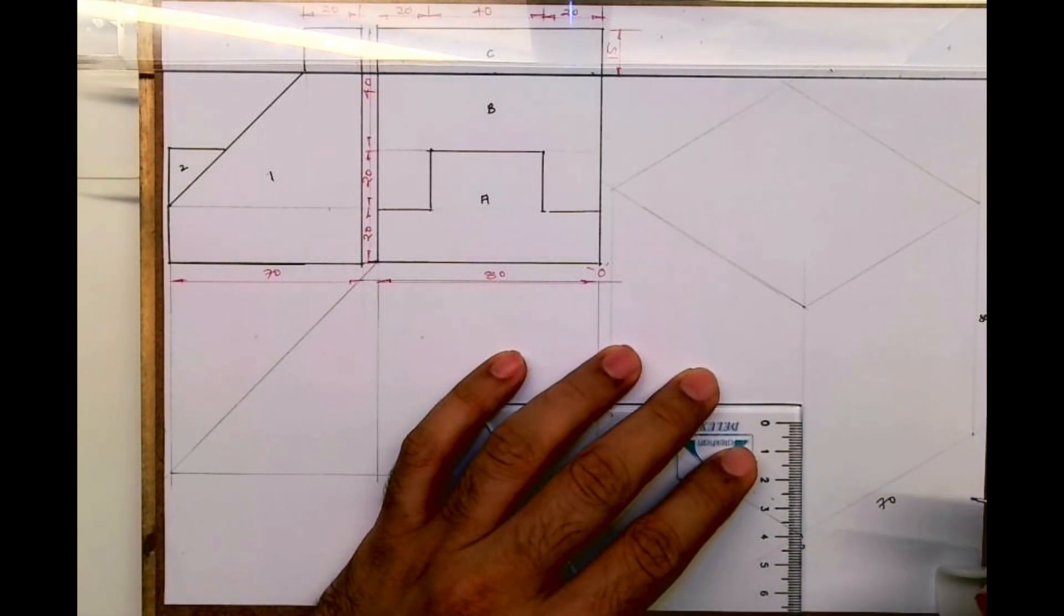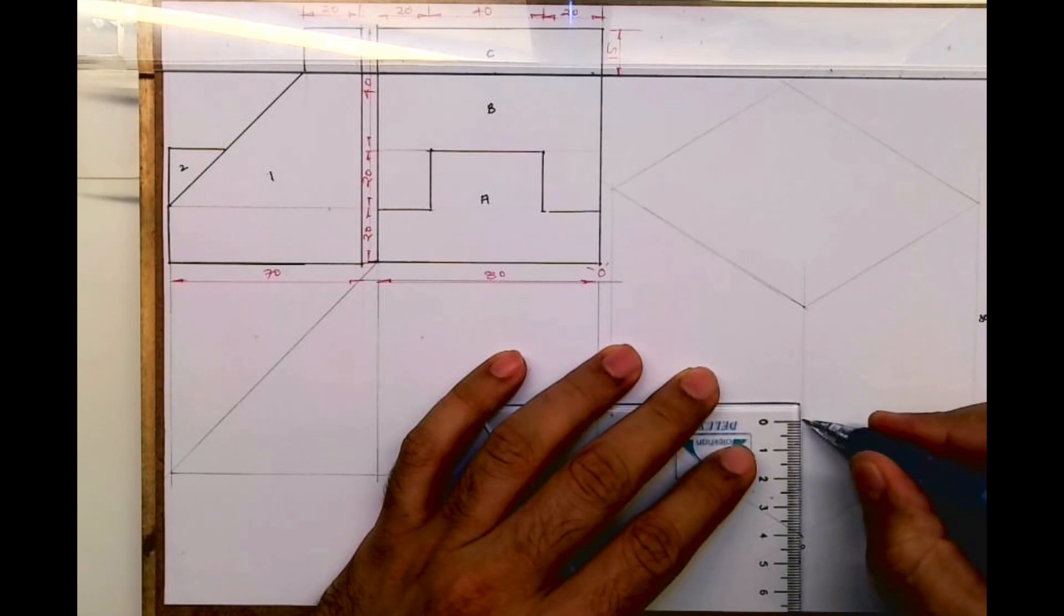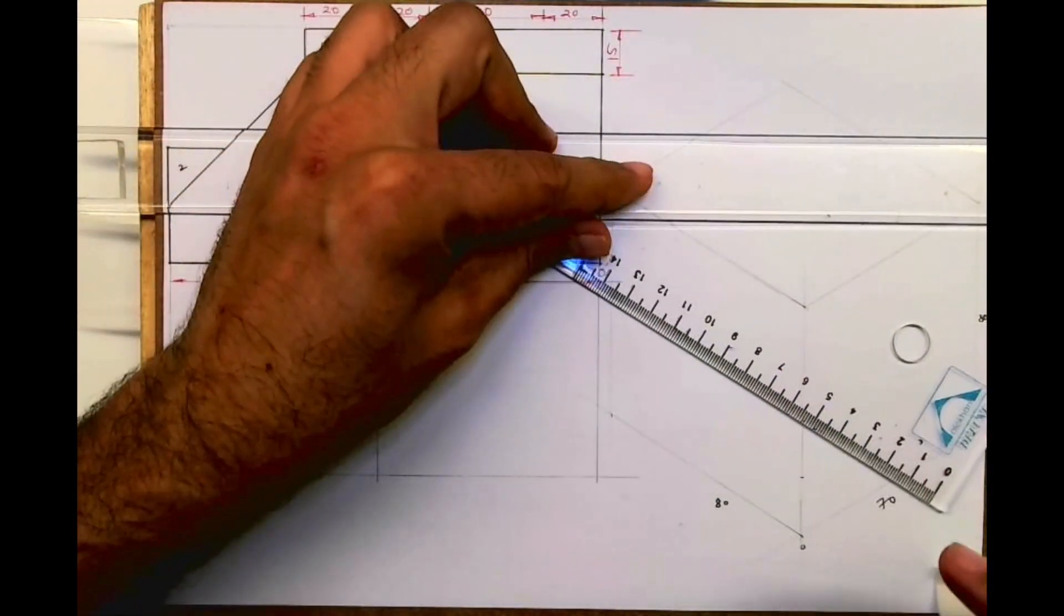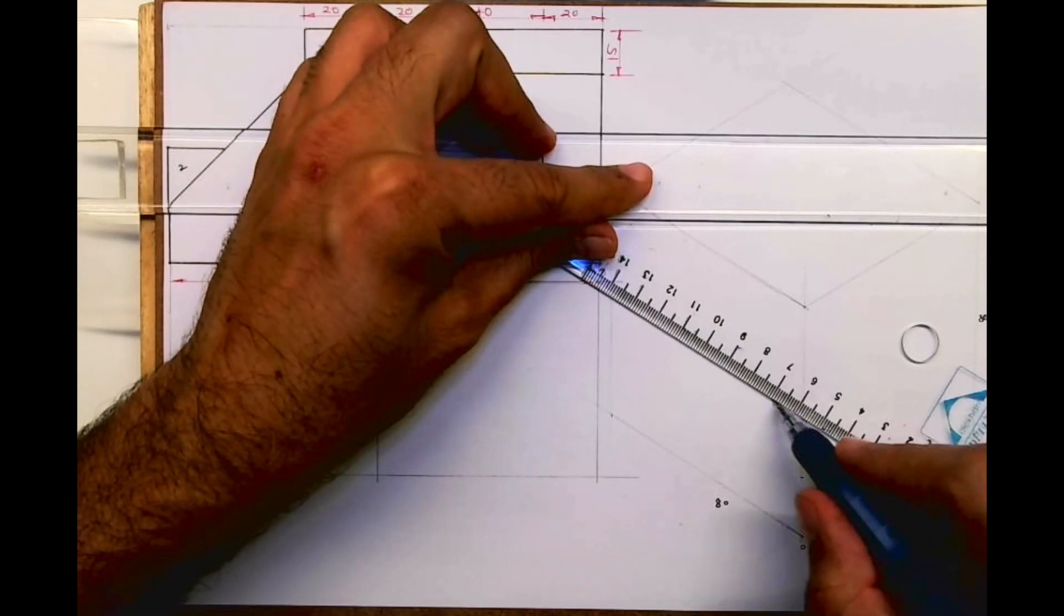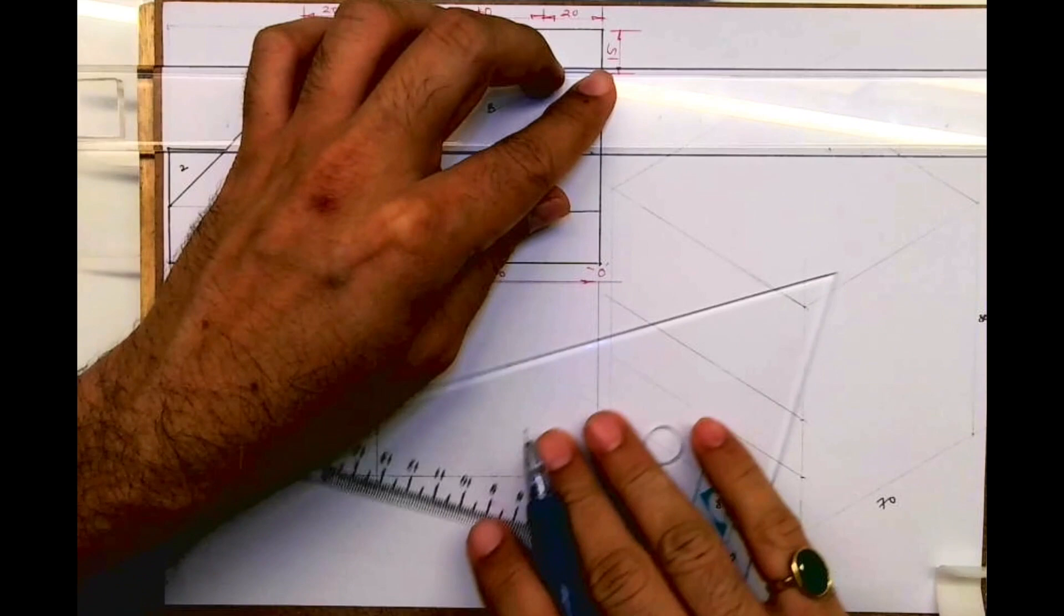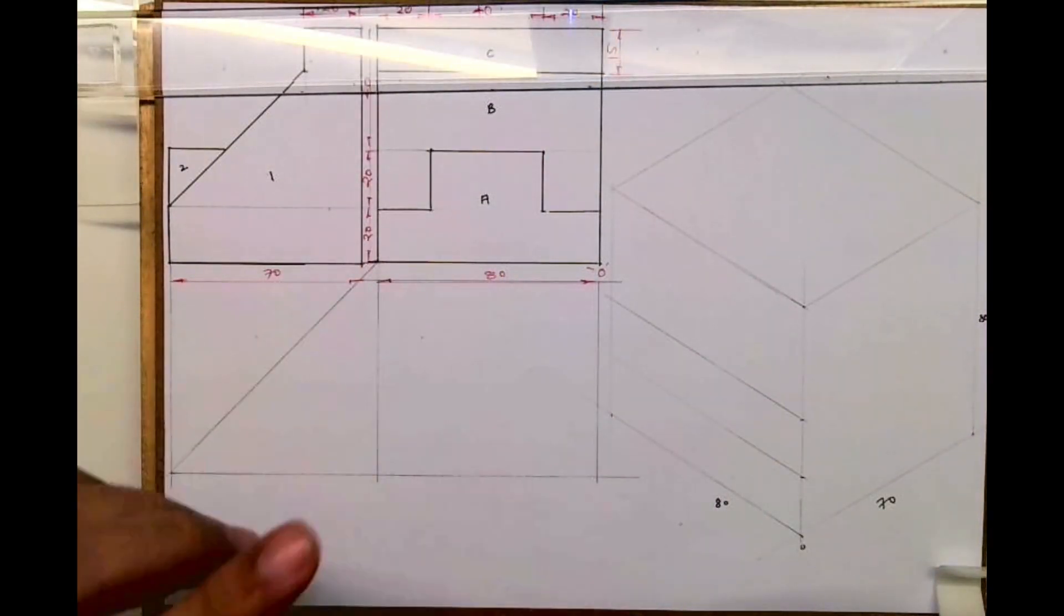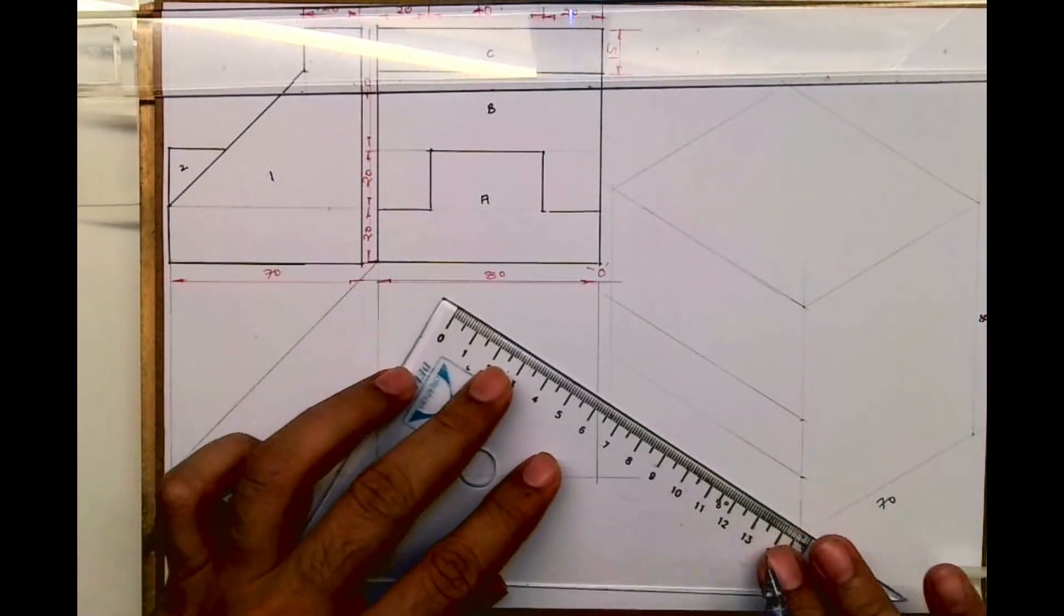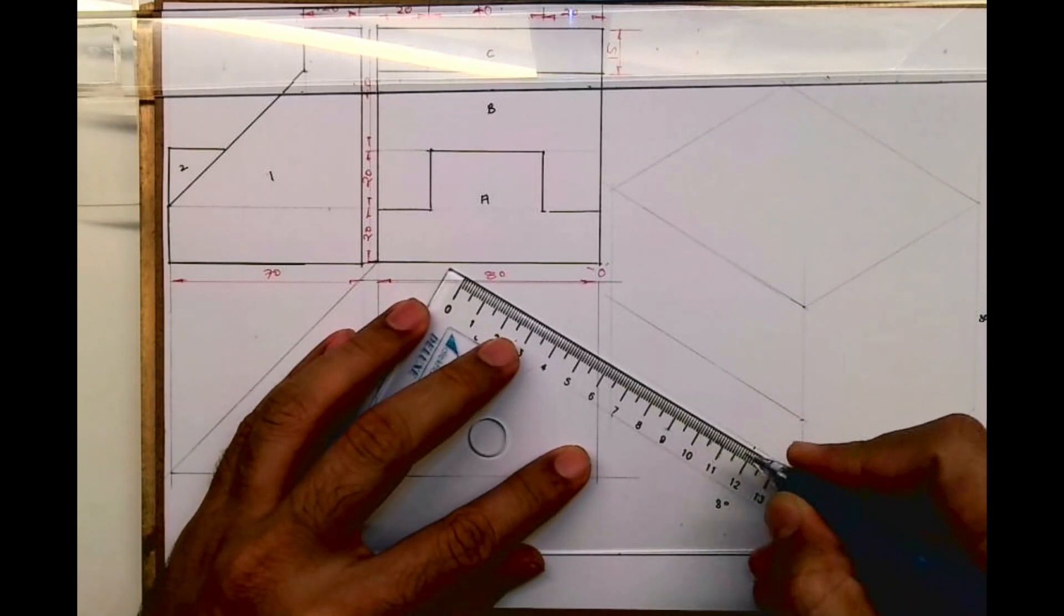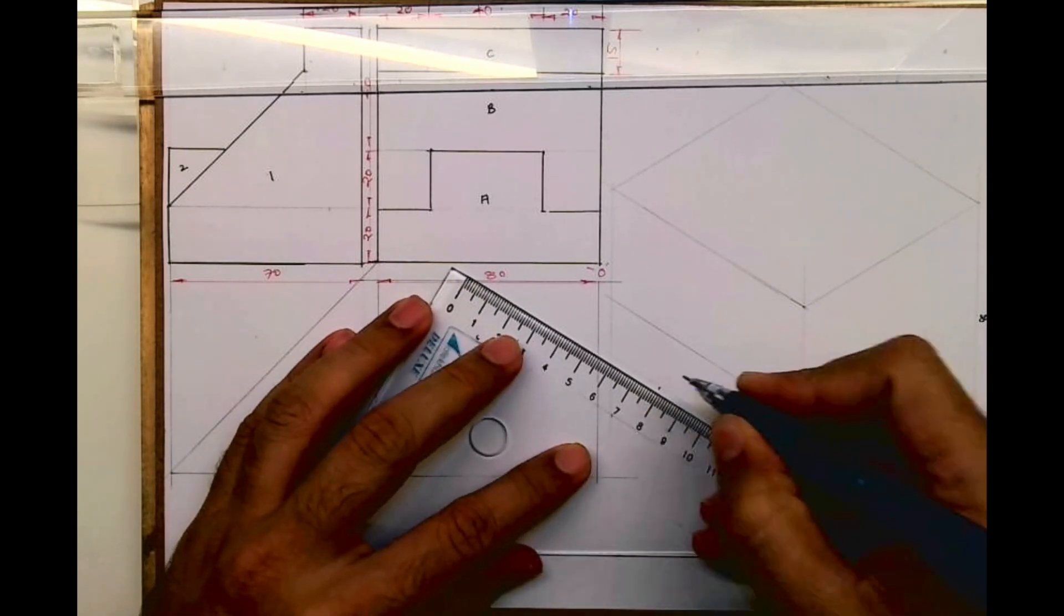So I'm taking 40 and again 20, and I'm drawing this line. Now how much is this? 20, 40, 20. So I'm drawing part A. You can draw part one also, both are okay.